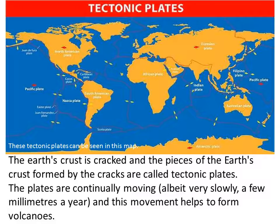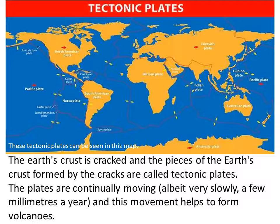The Earth's crust is cracked, and the pieces of Earth's crust formed by these cracks are called tectonic plates. These plates are continually moving, and this movement helps to form volcanoes. In this picture you can see the different tectonic plates.